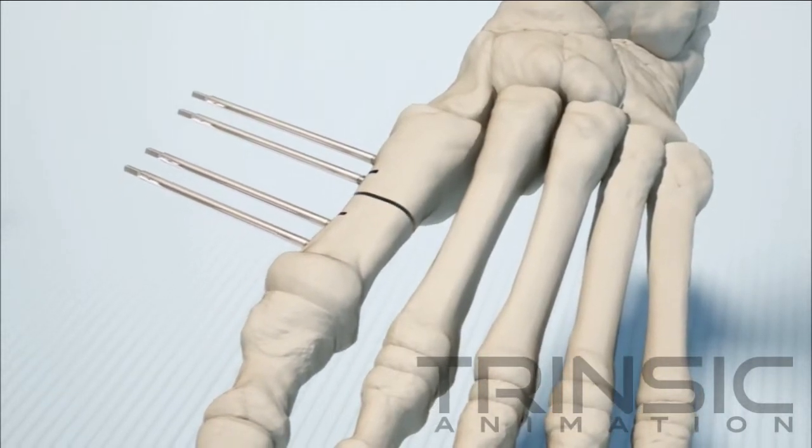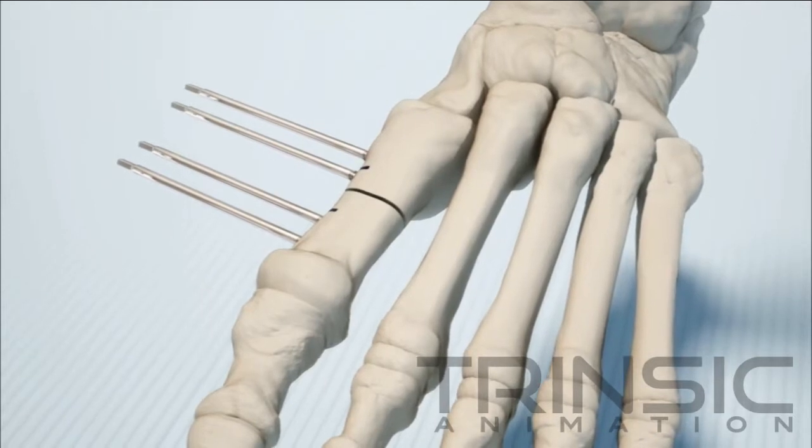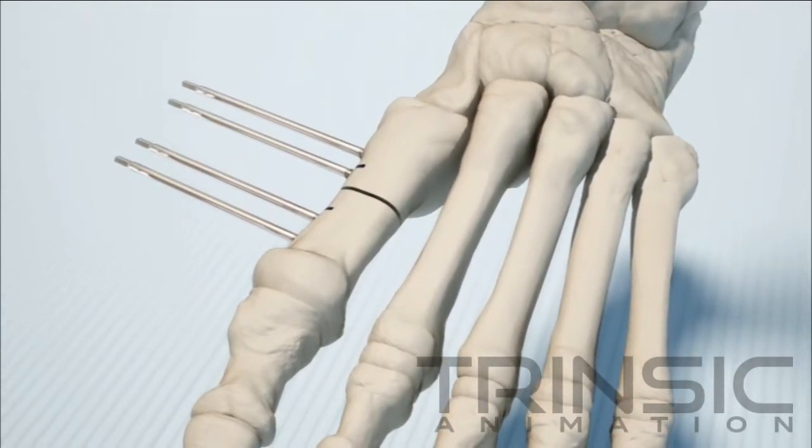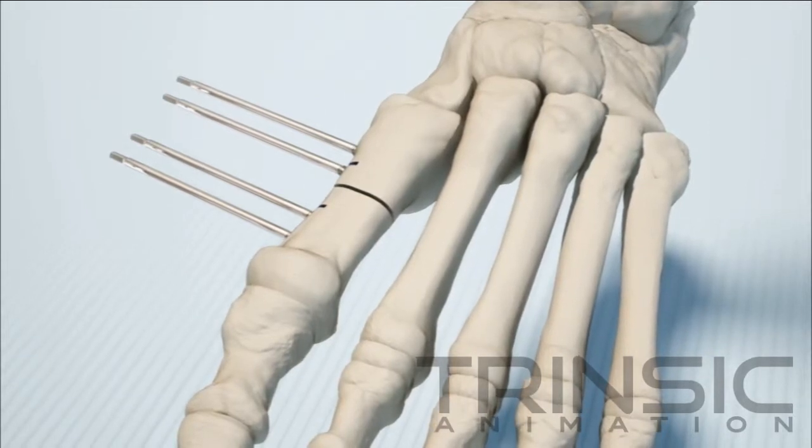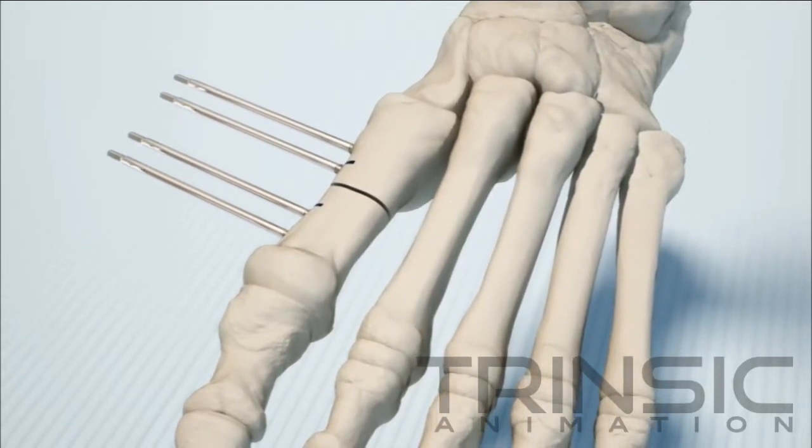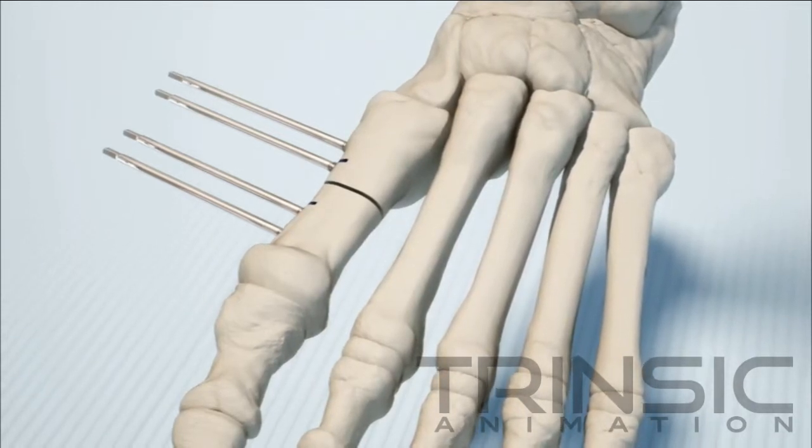With an osteotome, make sure the distal fragment is totally free. Notice that the pins are introduced first before making the mid-shaft cut. This will ensure that the compression and distraction of the two fragments will remain co-linear without any dorsiflexion or plantarflexion.